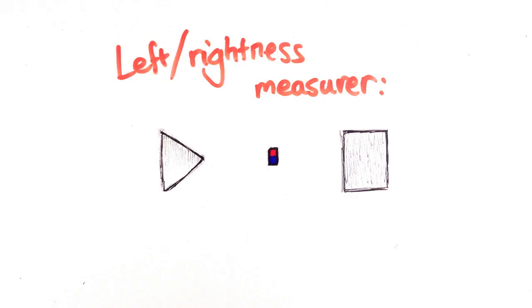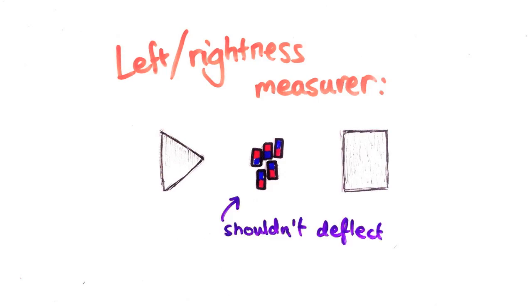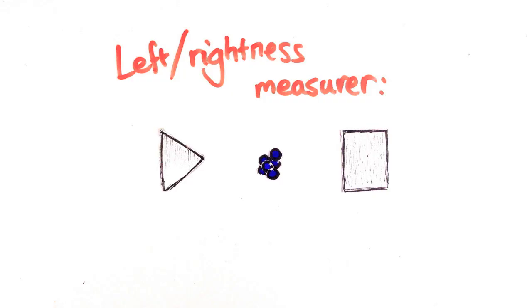Now let's use the same source of electrons we had before. We think that they're all pointing up or down, and so they should just go through this machine and they shouldn't be deflected at all. What happens? Half of them go right and half of them go left. So then, they were actually oriented left and right all along, but that can't be right either.